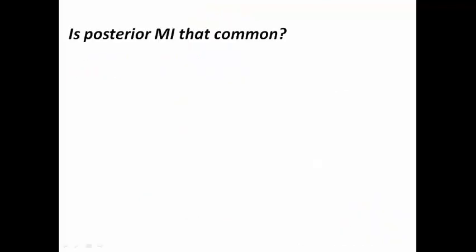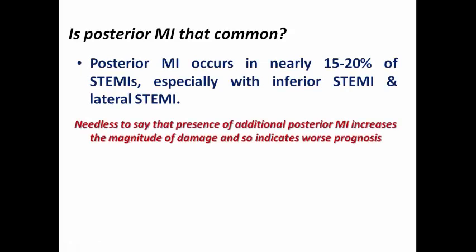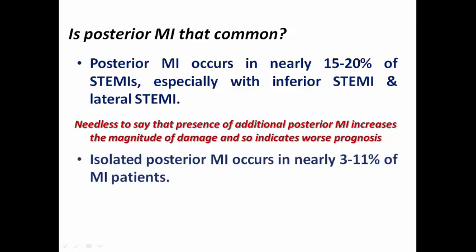How common is posterior MI? Posterior MI occurs in about 15 to 20% of STEMIs, especially with inferior STEMI and lateral STEMI. In that case we call it inferoposterior STEMI, inferoposterolateral STEMI, or sometimes inferoposterolateral STEMI. Presence of additional posterior MI increases the magnitude of damage to the heart, and when the size of MI is larger, this indicates worse prognosis, higher risk of LV dysfunction and arrhythmic complications.